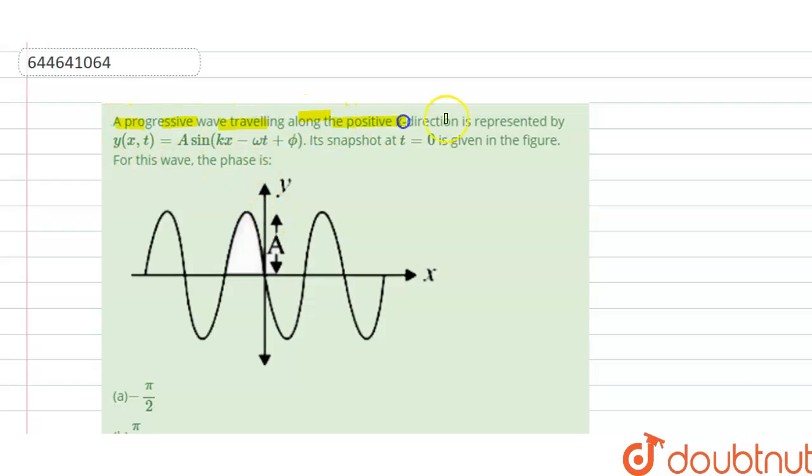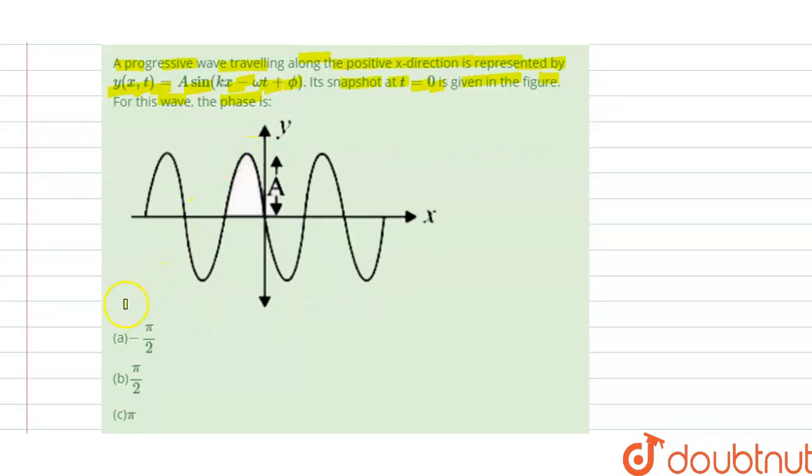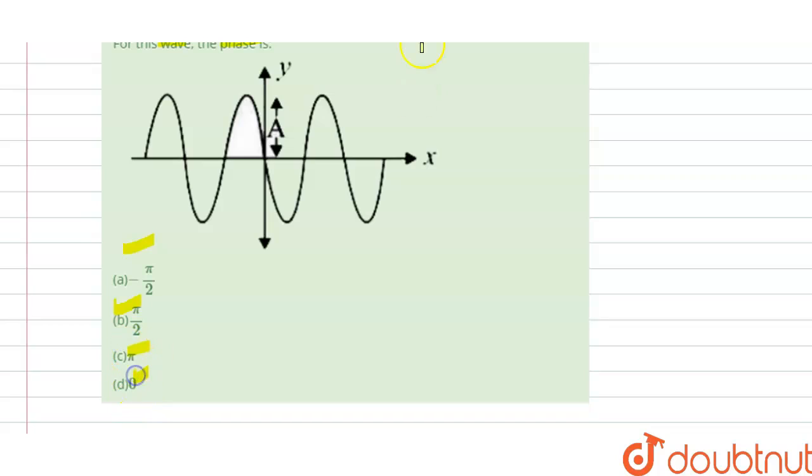Hello students, today our question is: a progressive wave traveling along the positive x direction is represented by y(x,t) equals A sin(kx - ωt + φ). This is the displacement, where A sin kx minus omega t plus phi. Its snapshot at t equals zero is given in the figure.